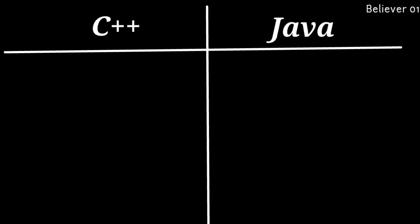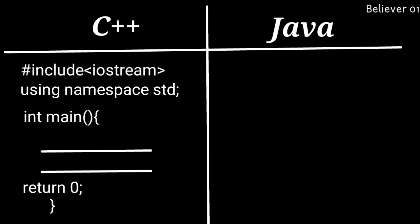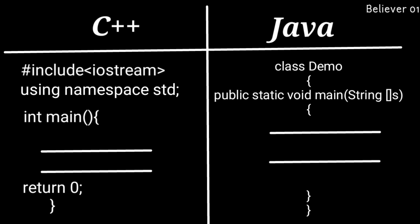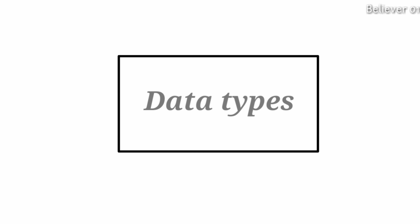Now let me clarify why C++ is not a pure object-oriented programming language. In C++ syntax, we can run a program without using the class concept, whereas in Java we must use classes in order to run a program. So Java is called a pure object-oriented programming language, whereas C++ is an object-oriented programming language but not called a pure object-oriented programming language.